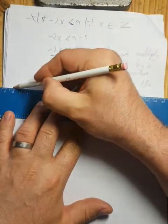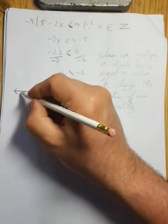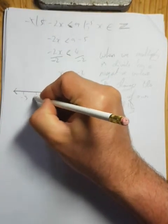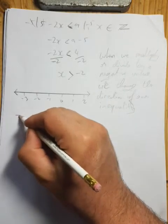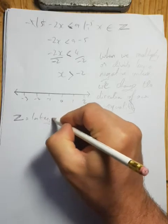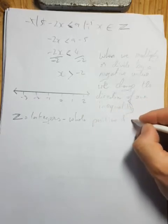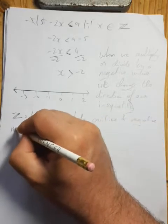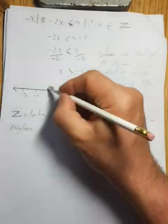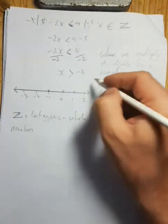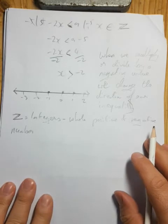When you do an inequality, you always illustrate your answer on a number line, even if the question doesn't explicitly say it. So on the number line: minus 3, minus 2, minus 1, 0, 1, 2. ℤ is the integers, which are the whole positive and negative numbers. So x is any whole positive or negative number bigger than minus 2, meaning minus 1, 0, 1, 2, 3, 4. Because they're integers and whole numbers only, I illustrate them on the top of the number line.